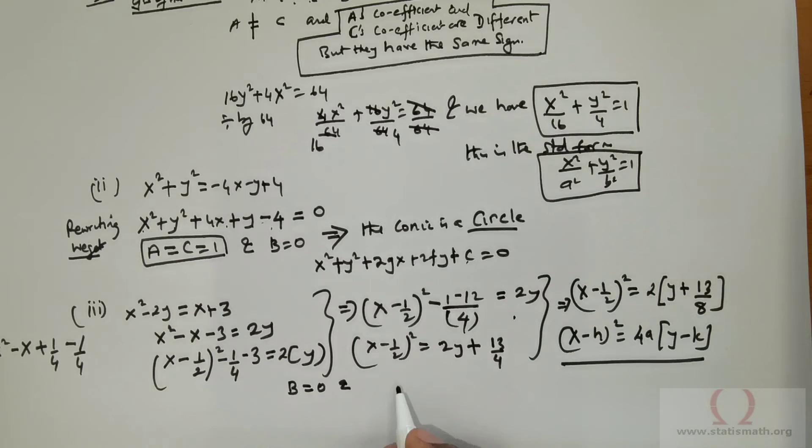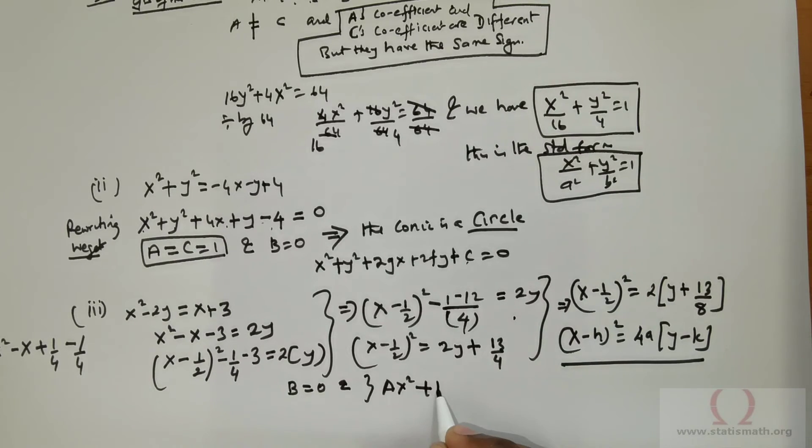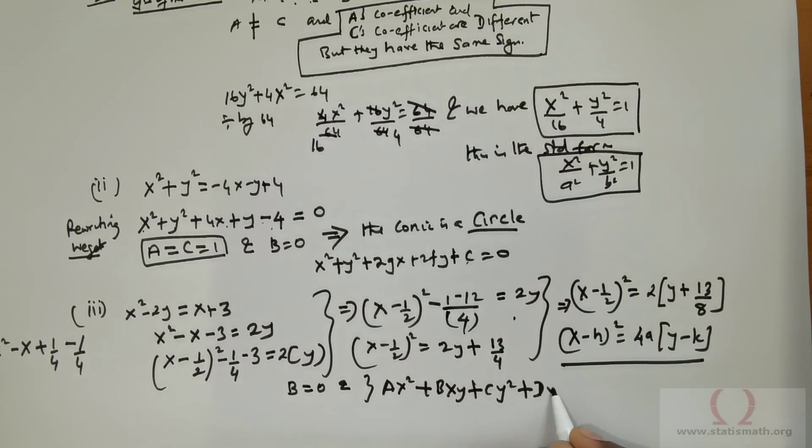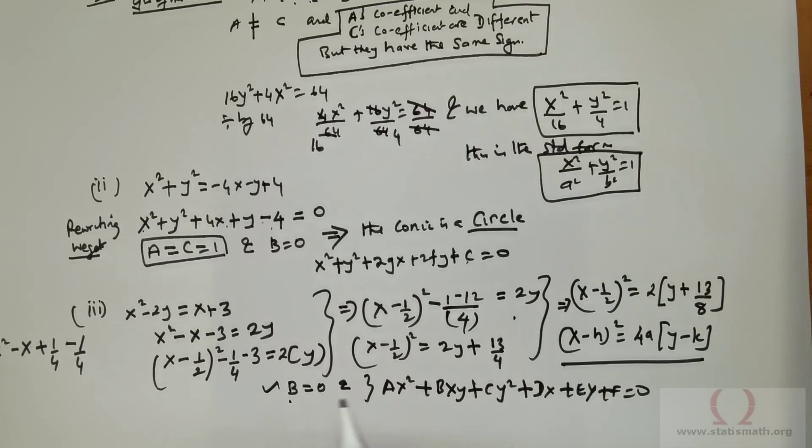So, if we were to take the general equation, which is ax squared positive bxy, positive cy squared, positive dx, positive ey, positive f equals 0. Now, comparing, we see that b, the xy term is not there.